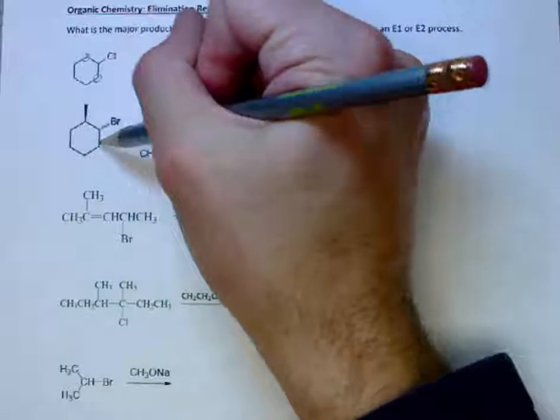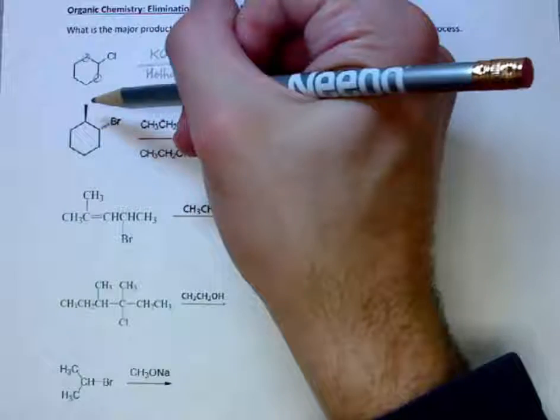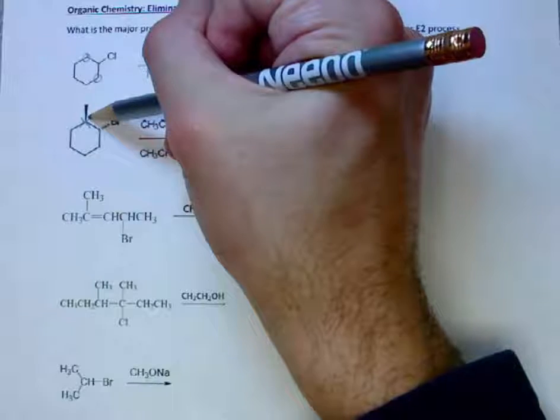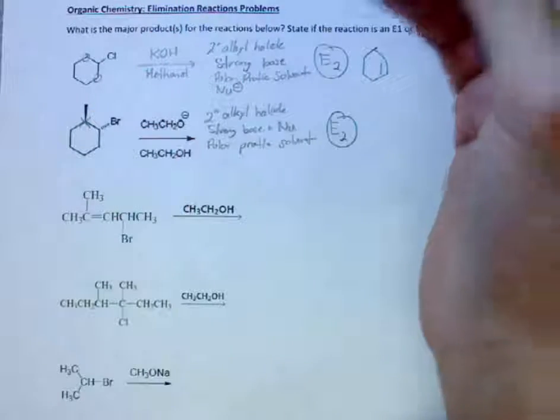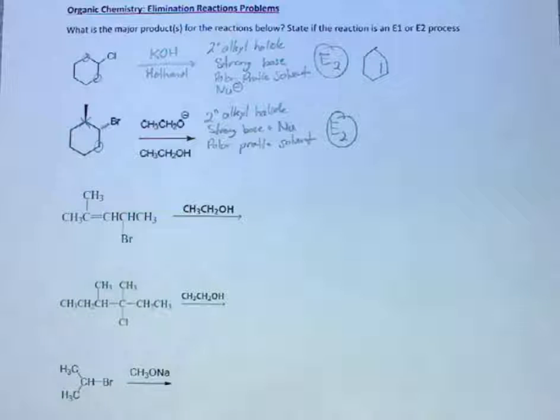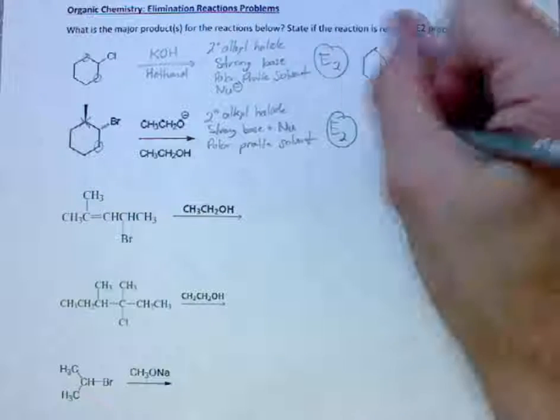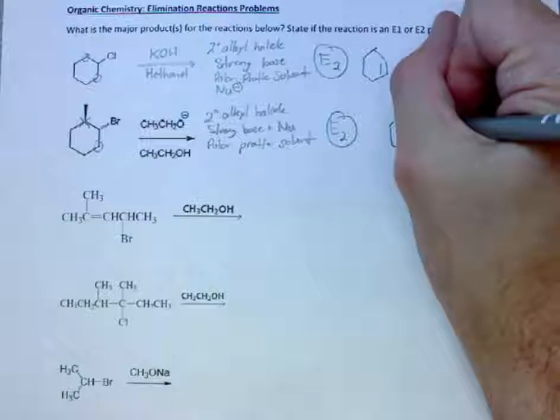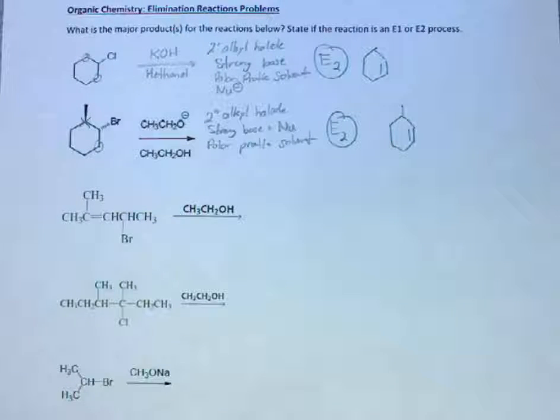We have beta hydrogens here and here however the beta hydrogens need to be anti-periplanar and this carbon does not have the beta hydrogens as anti-periplanar but this carbon does. Our product will be this.